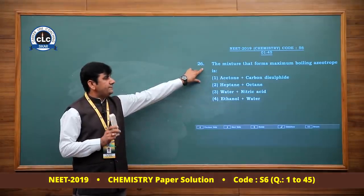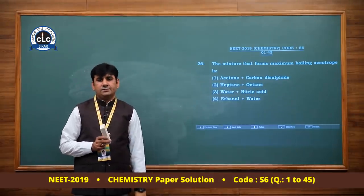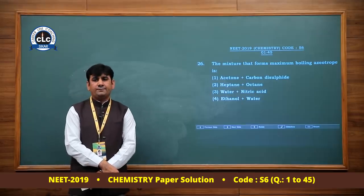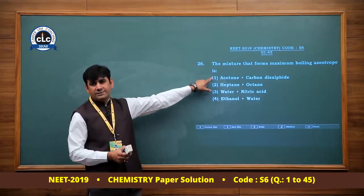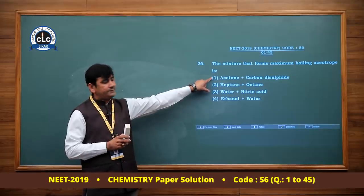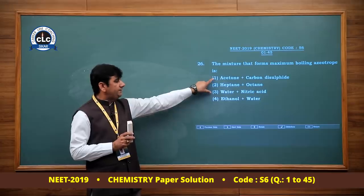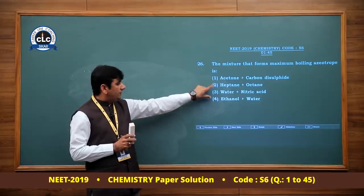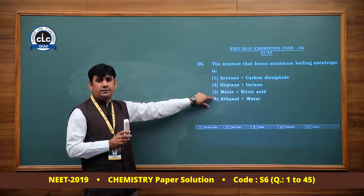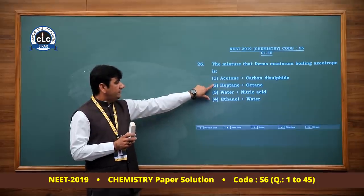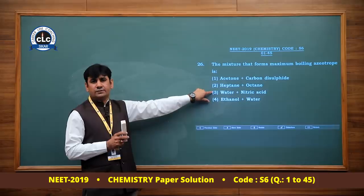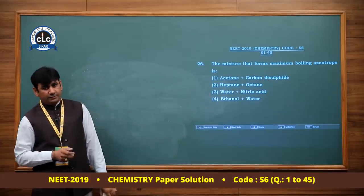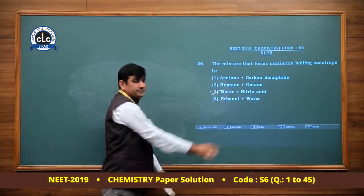The mixture that forms maximum boiling azeotrope: maximum boiling azeotrope is formed in non-ideal negative deviation solutions. Options 1 (acetone + carbon disulfide) and 4 (ethanol + water) are positive deviation examples. Option 2 (heptane + octane) is ideal solution. Option 3 (water + nitric acid) is a negative deviation non-ideal solution — maximum boiling azeotrope forms here. Option 3 is correct.